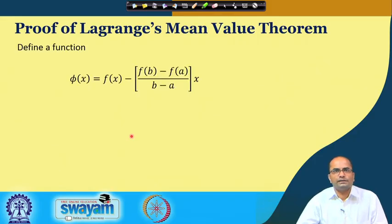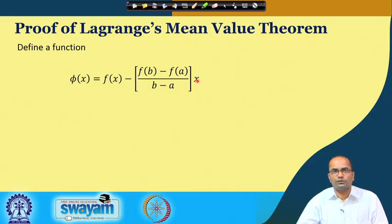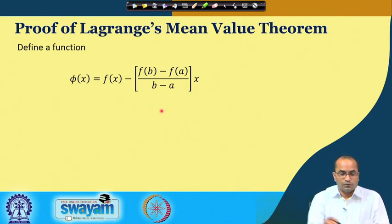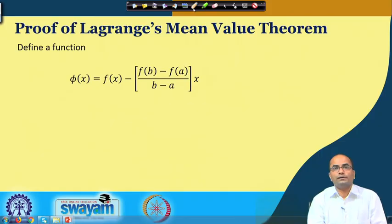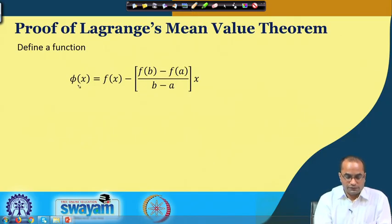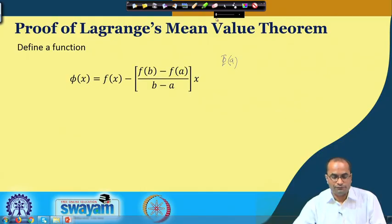The proof is straightforward. We consider the auxiliary function φ(x) = f(x) - f(a) - [f(b) - f(a)] / (b - a) · (x - a). This is the difference of two functions: f(x) minus a constant times (x - a). Since f is continuous on the closed interval and differentiable on the open interval, φ is also continuous and differentiable on those intervals.